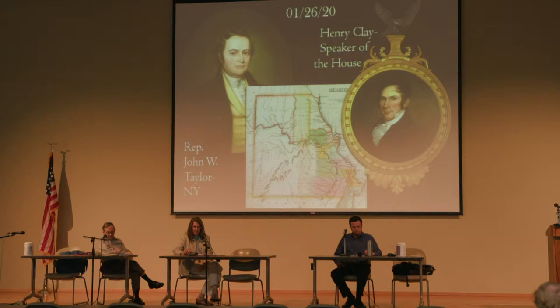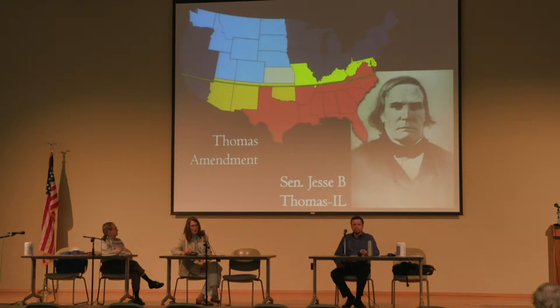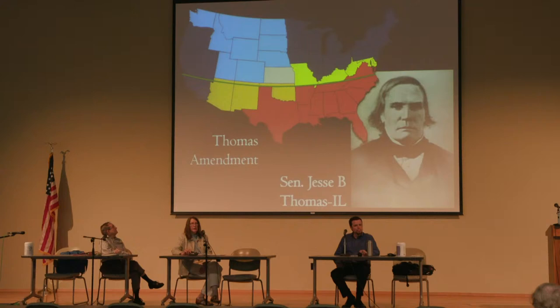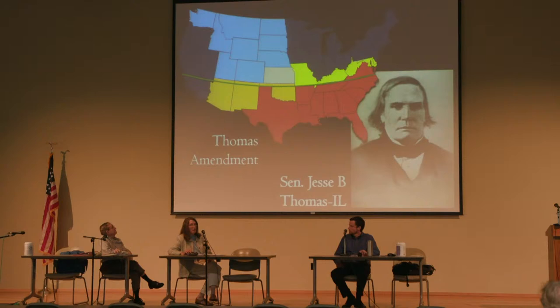Jesse Thomas, Senator from Illinois, introduced the Thomas Amendment — another form of restrictionist legislation. Under the Thomas Amendment, Missouri would be allowed to enter the Union, but there would be no other slavery allowed in the rest of the territory. The boundary line was 36°30' — most of Missouri's southern boundary, but not all. The boot heel lies below it. So Missouri could come in as a slave state with the Thomas Amendment as long as not all of the state was above that line.